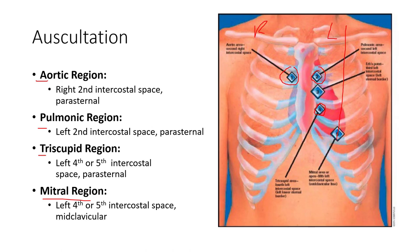We will hear all of the valves - we'll hear the S1 and S2 - in any region. It's just that these regions are where we hear those particular valves a little bit more clearly than others. So we'll hear lub and dub, which are combinations of two valves closing for each cardiac sound.